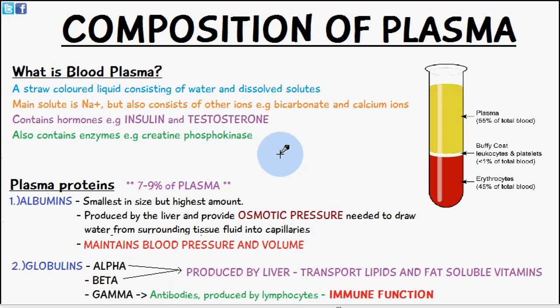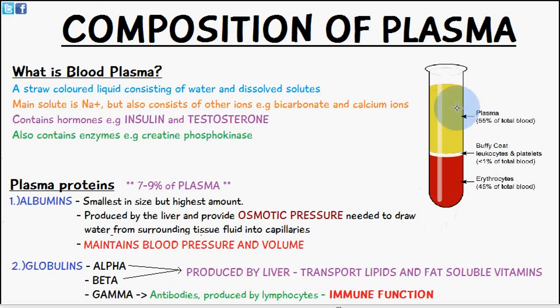What is blood plasma? It's a straw-coloured liquid which consists of water and dissolved solutes. The main solute is sodium ions, but it also contains other ions like bicarbonate and calcium ions. It contains hormones, for example insulin and testosterone, and also enzymes such as creatine phosphokinase. You can see in the image here the straw-coloured blood plasma. It consists of 55% of the total blood, while erythrocytes make up 45%.